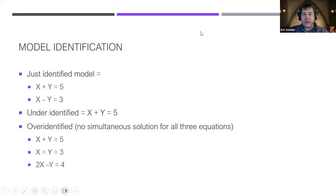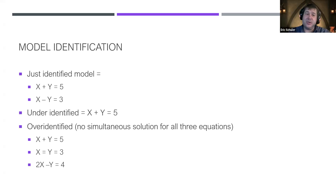That's the idea when talking about model identification — just a quick primer, it's going to become important when you use your own data. I'll provide some recommendations: typically you want at minimum three items per construct for a just-identified model, but more realistically you probably want five at minimum. That way, if you have a bad item, you still have enough items to identify it.